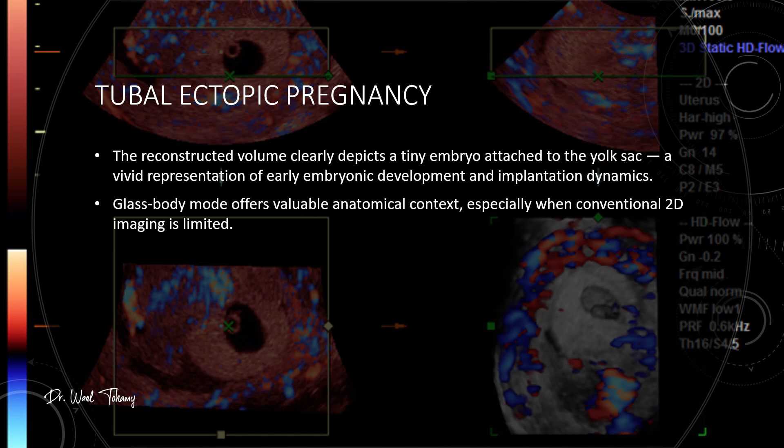In this reconstructed 3D volume, you can clearly see a tiny embryo attached to the yolk sac — a vivid snapshot of early embryonic development and how implantation occurred. Glass body mode gives us that extra layer of anatomical context, which can be especially valuable when 2D imaging alone doesn't provide the full picture. Always remember, when standard views leave you uncertain, 3D can be the key to unlocking these fine details.